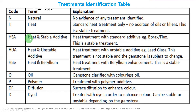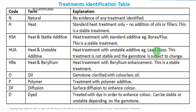HUA means heat with unstable additive — heat treatment with an unstable additive, for example lead glass or cobalt glass. This treatment is not stable and the gemstone is subject to change later. HBE — where BE stands for beryllium — means heat with beryllium enhancement: heat treatment with beryllium enhancement. This is a stable treatment, but it is illegal.